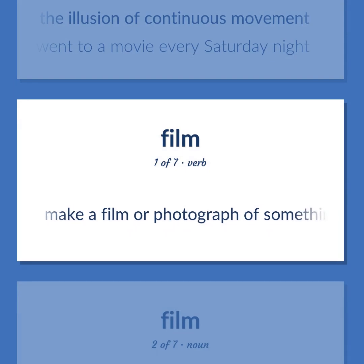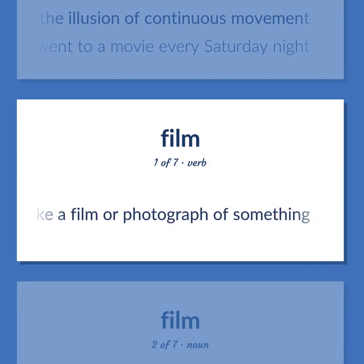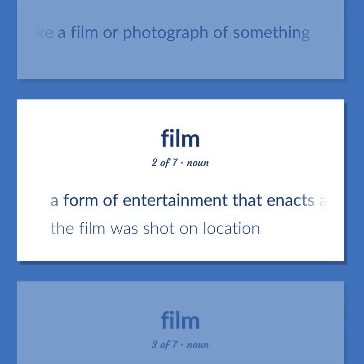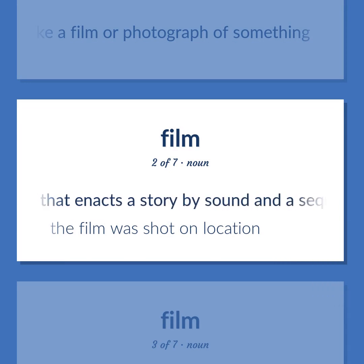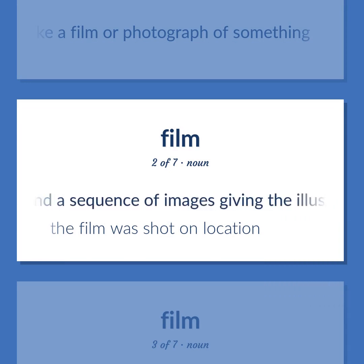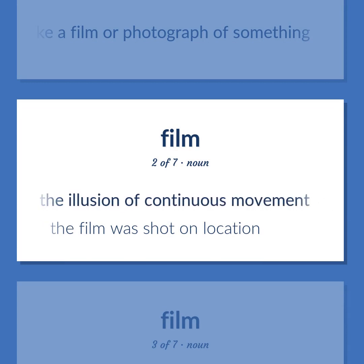Film (verb): Make a film or photograph of something. A form of entertainment that enacts a story by sound and a sequence of images giving the illusion of continuous movement. Example: The film was shot on location.